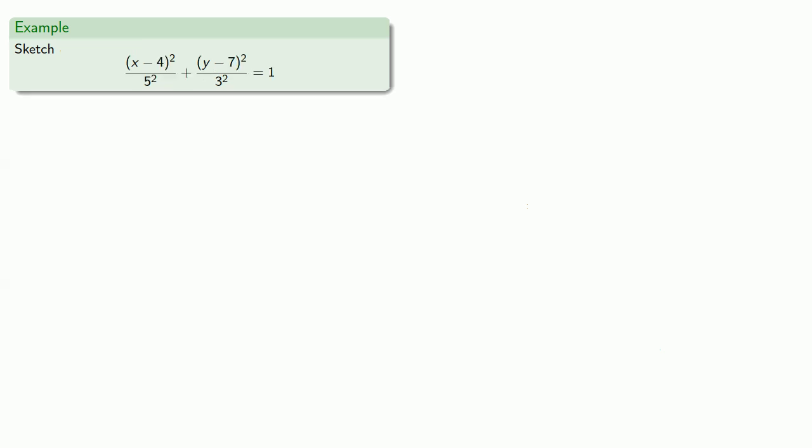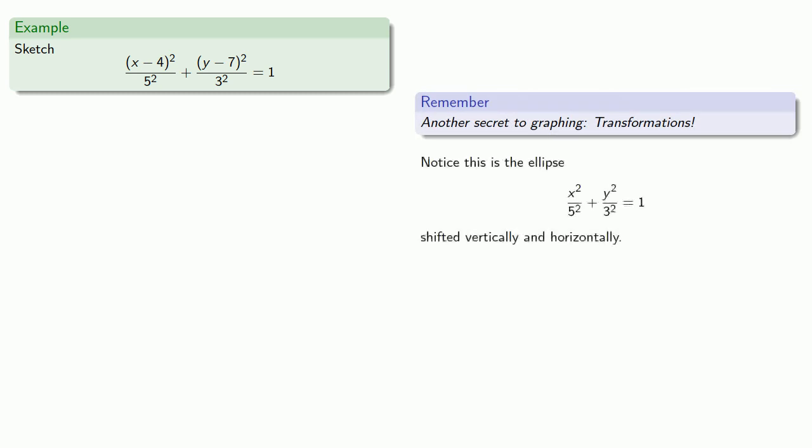Another secret to graphing is transformations. Notice that this equation is actually the ellipse shifted vertically and horizontally. So let's consider what happens with this ellipse. The least x squared can be is 0, in which case we find two points on the ellipse, and we can graph these points.